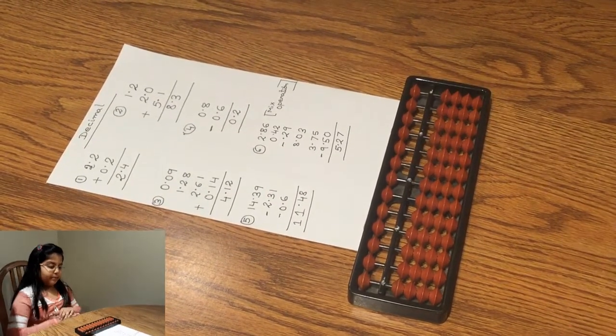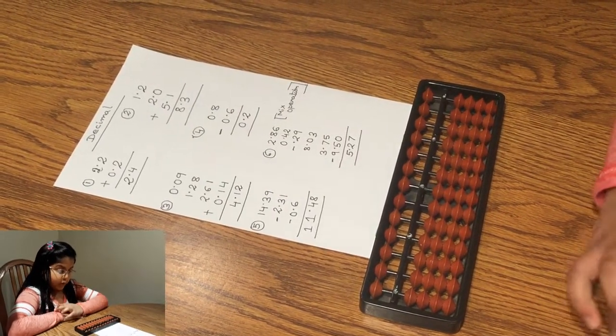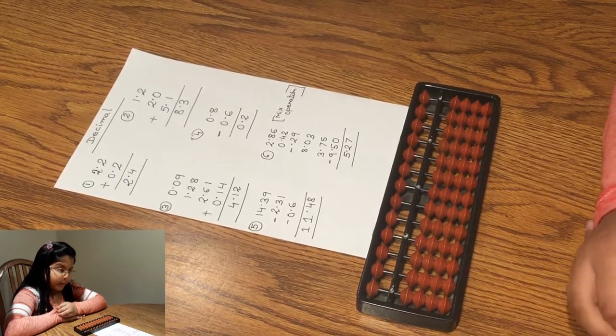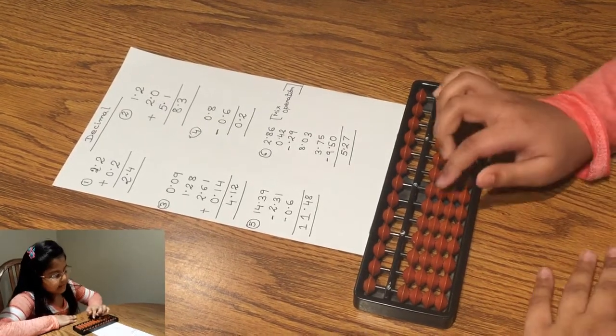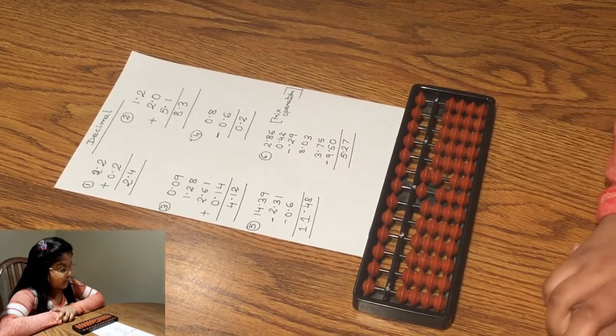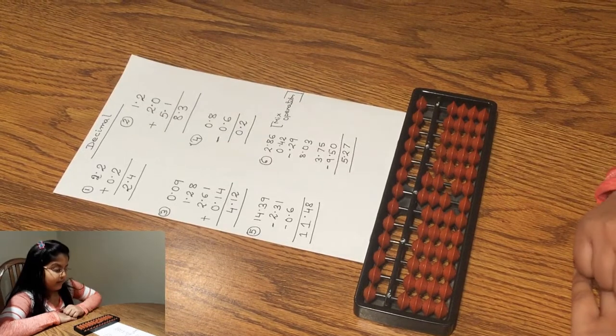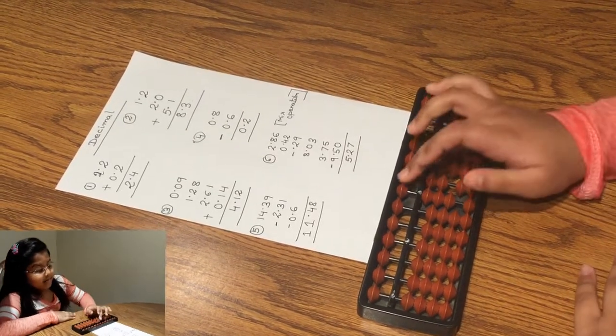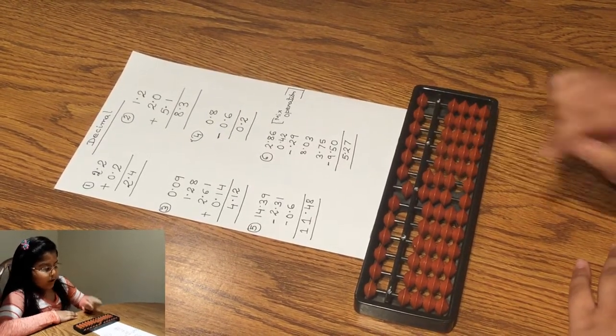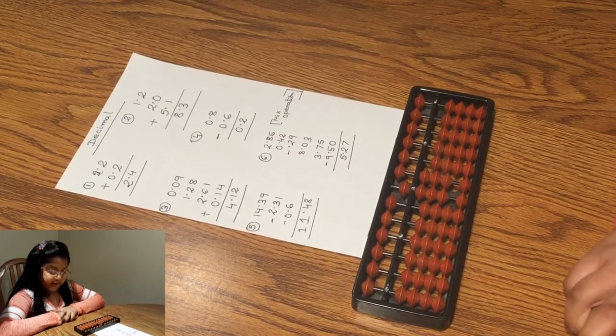Let's try another one. Let's do 1.2 plus 2.0 plus 5.1. Now, 1.2 plus 2.0 plus 5.1, which gives us the result of 8.3.